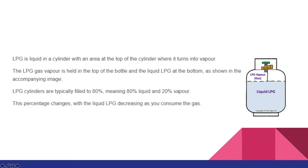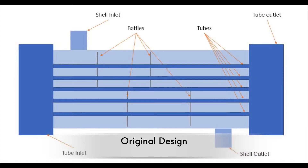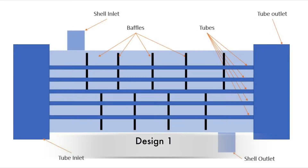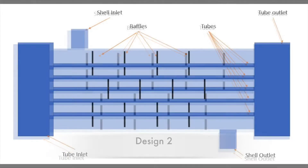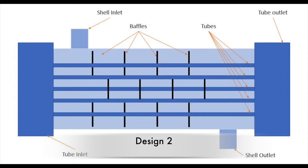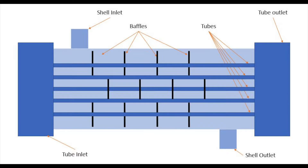For an LPG cylinder, the contents need to exist as 80 percent liquid and 20 percent gas. This is the original design for the heat exchanger that the company provided us, and this is the modified design. We added straight baffles and increased the number of baffles. For the second design, we changed the geometry to a donut-hole style and also increased the number of baffles.